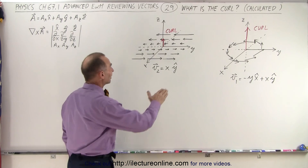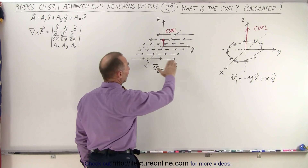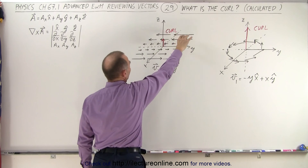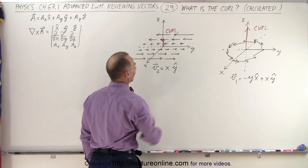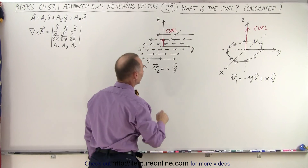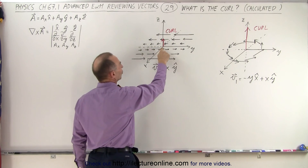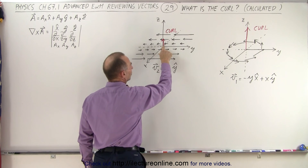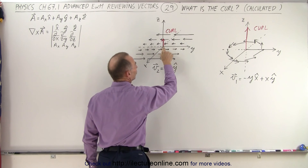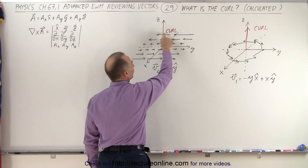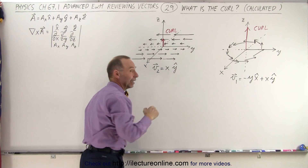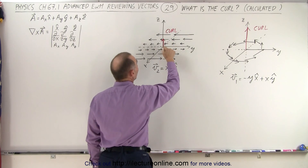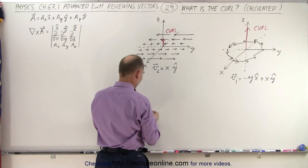Let's say, for example, that this represents a current, like a river. On this side, the river flows this direction, and on this side, the river flows in this direction. Starting from the origin, if I start moving outward on a small little boat, will I go straight, or will I start curving to the side? If that was a current, you could see the farther out I go, the more I get pushed by the stream.